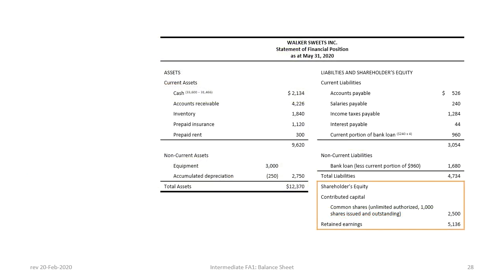We then move to shareholders' equity. The correct presentation begins with contributed share capital — sometimes called paid-in capital. Our disclosure shows common shares: unlimited authorized shares and 1,000 shares issued and outstanding with a capital value of $2,500. The correct presentation is to disclose the number of shares outstanding. If more than one class of shares exists, you need a heading for contributed capital or paid-in capital; if only one item exists, you can omit that heading and just show common shares.